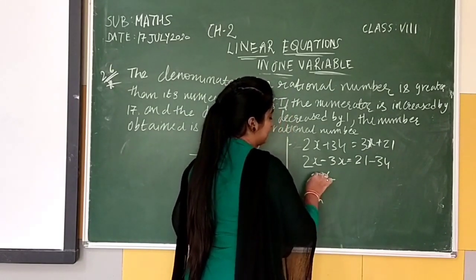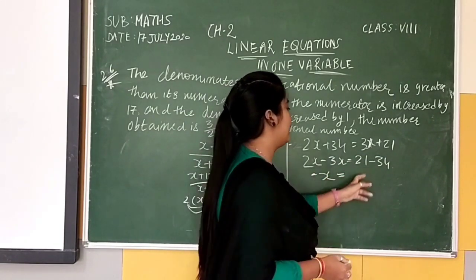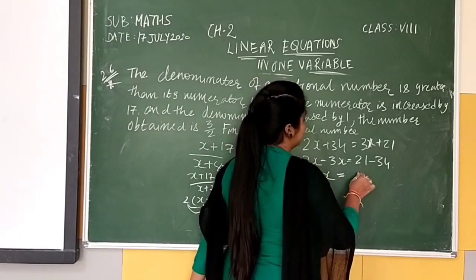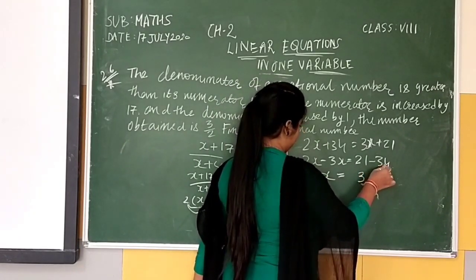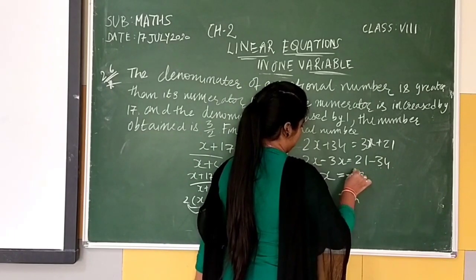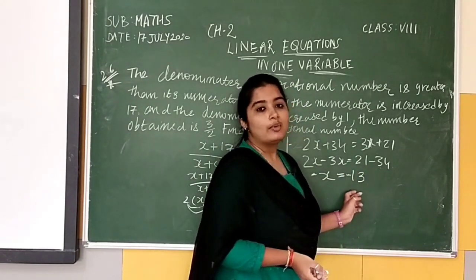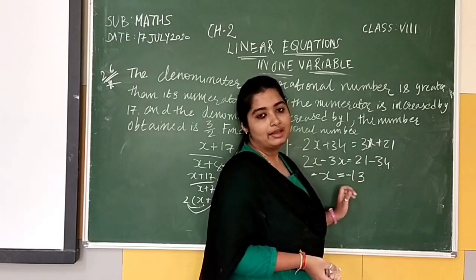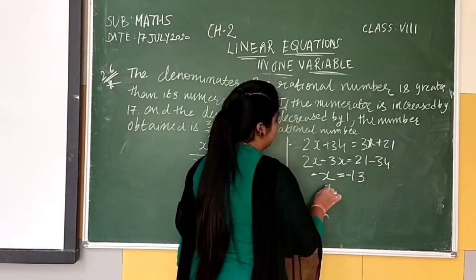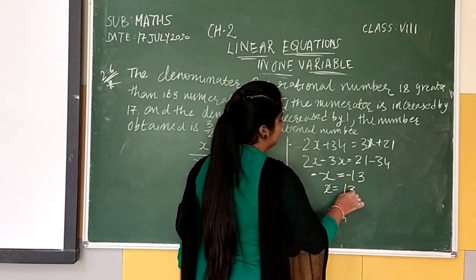Here we have minus X equal to 34 minus 21. It will be minus X equal to minus 13. We will cancel out minus minus from both sides. So we will get X equal to 13.